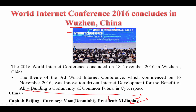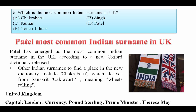Which is the most common Indian surname in the UK? Patel has emerged as the most common Indian surname in the UK, according to a new Oxford Dictionary release. Other surnames include Chakrabarti, which derives from Sanskrit meaning 'wheels rolling.' The capital of the UK is London, the currency is Pound, and the Prime Minister is Theresa May.